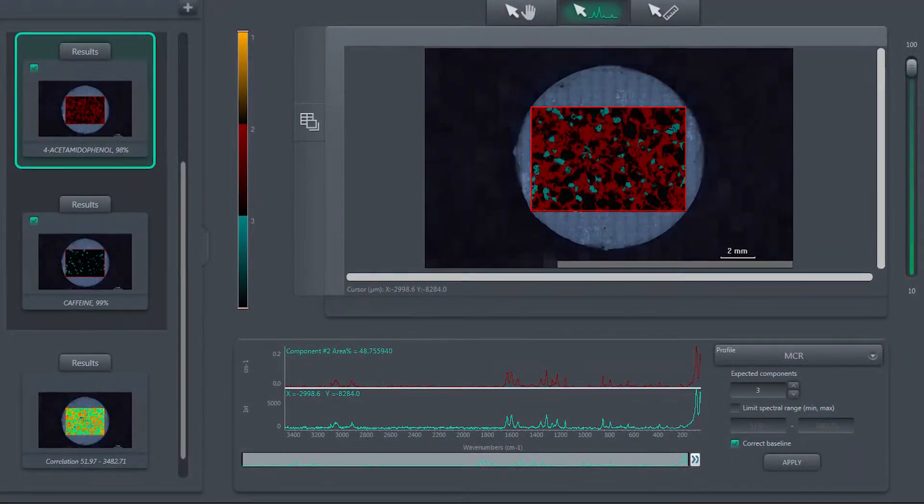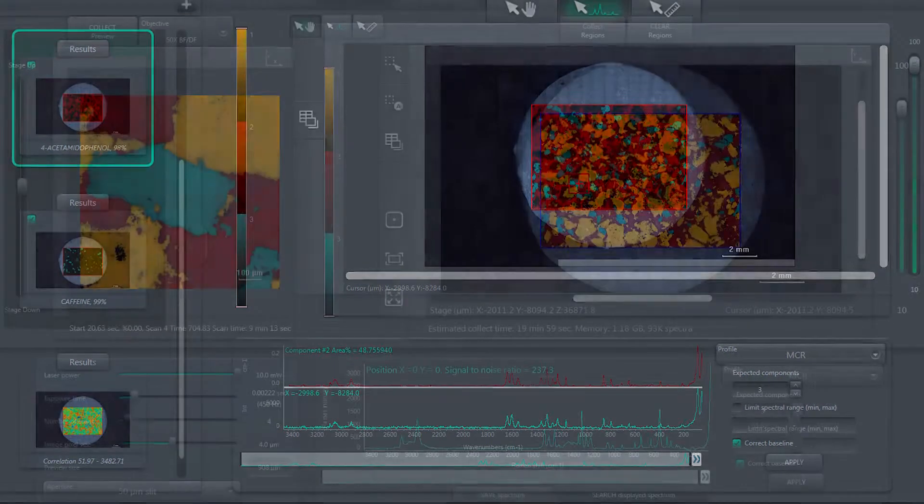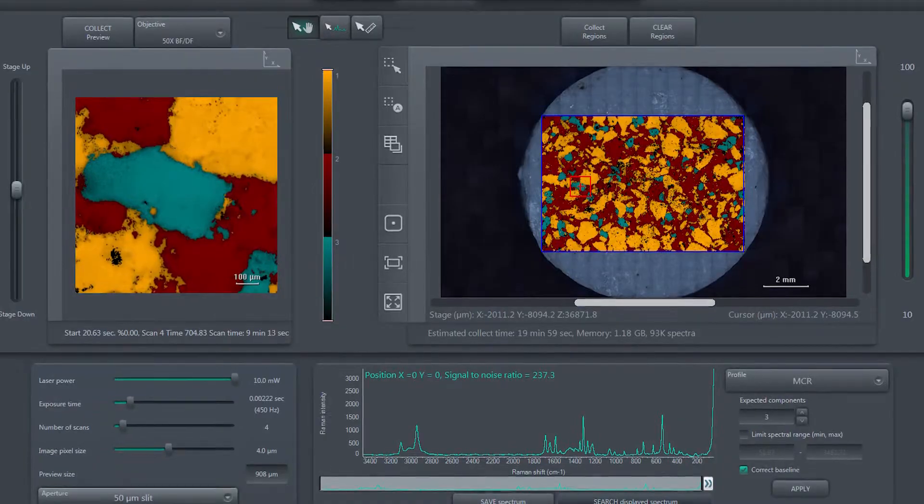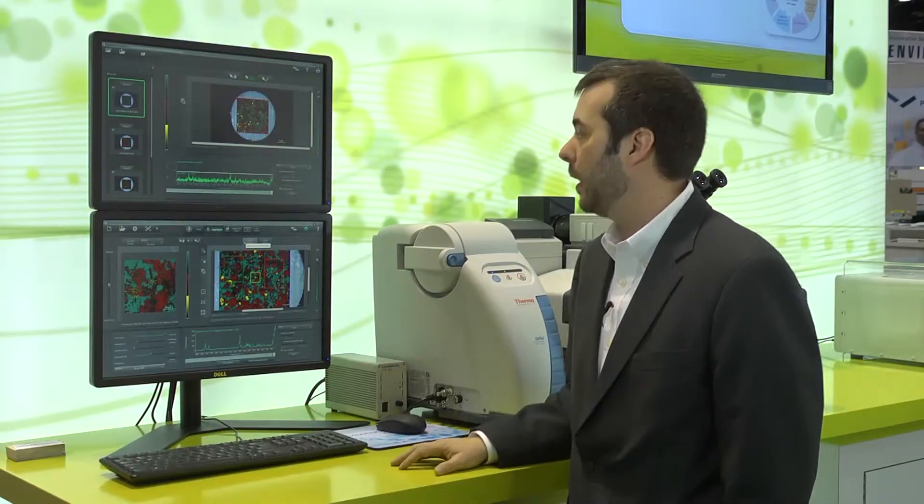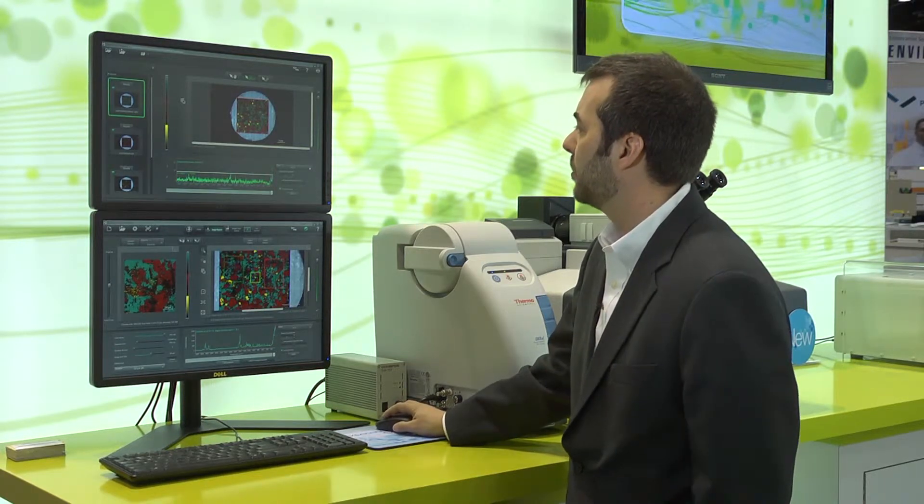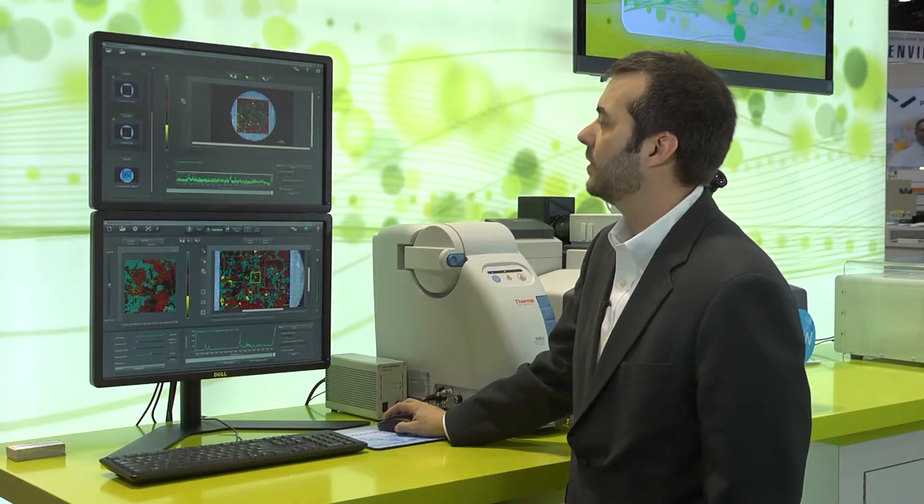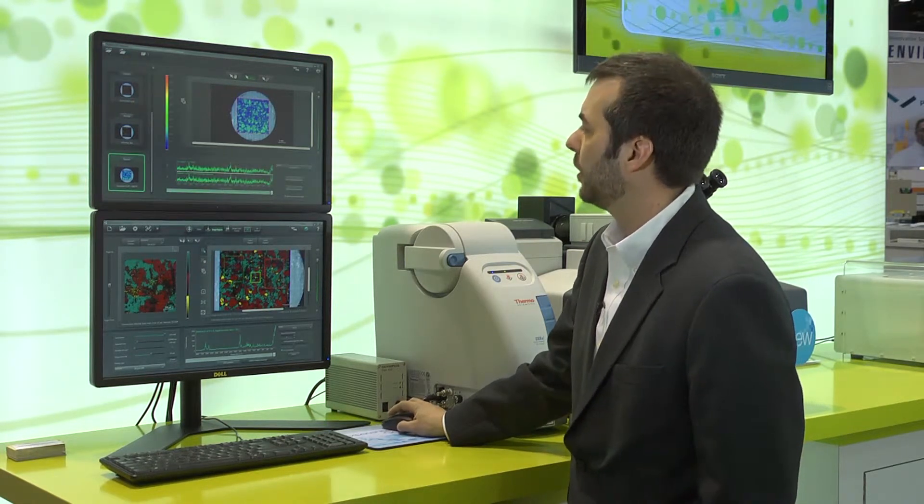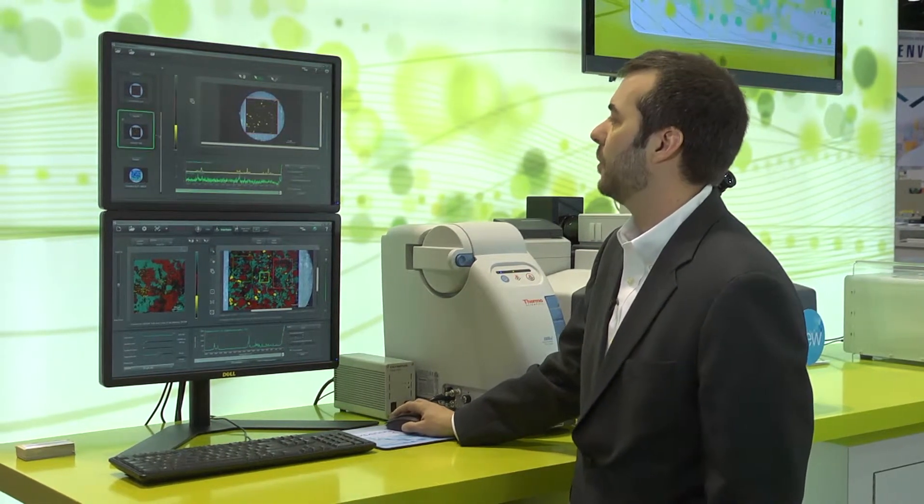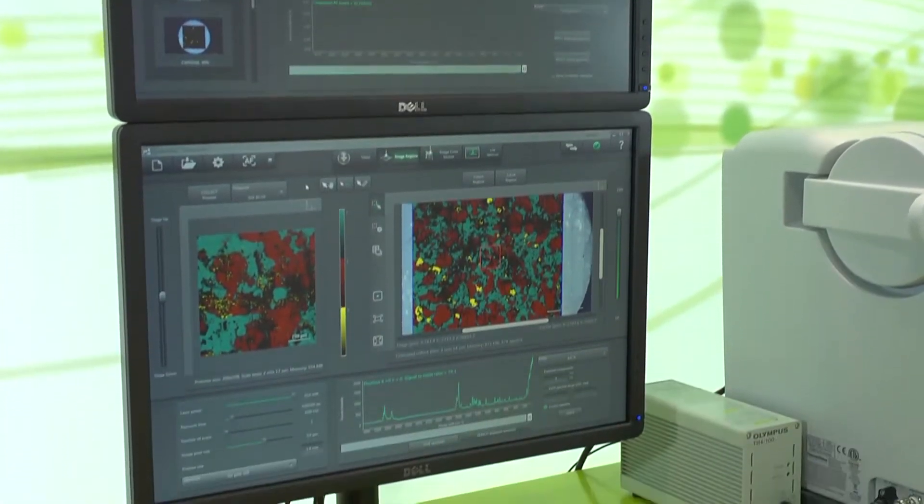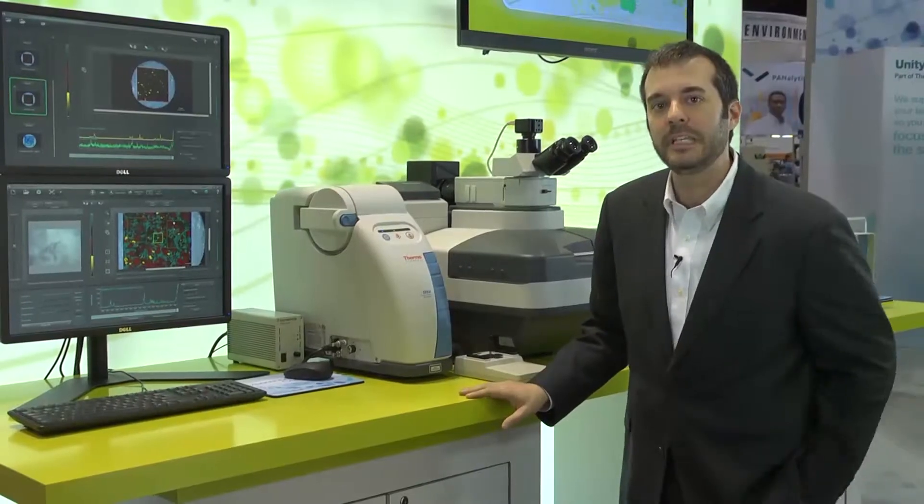We're also showing how you can perform many different experiments after the data has been collected to do analysis or post-processing, interpreting the data in many new and different ways. That's as simple as just selecting a few parameters that allow you to refine exactly what you're looking for, look at different spectral features, for example, and really gain a visual understanding of your image.